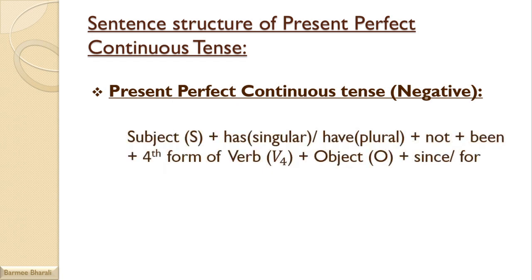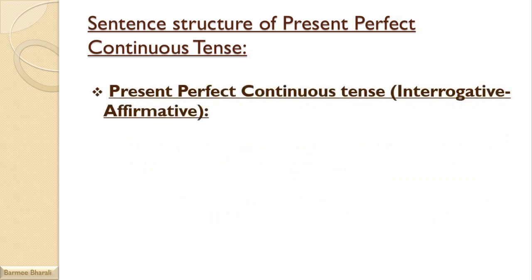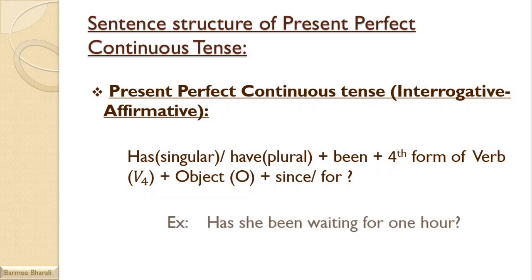For present perfect continuous tense negative, the structure is: Subject + has/have + not + been + fourth form of verb + object + since/for. For example, 'She has not been waiting for one hour.' For the interrogative: Has/Have (has with singular, have with plural) + been + fourth form of verb + object + since/for + question mark. For example, 'Has she been waiting for one hour?'